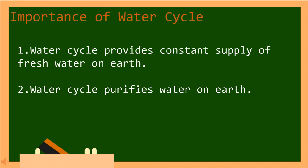Let's have the importance of water cycle. First, water cycle provides constant supply of fresh water on earth. Second, water cycle purifies water on earth. In Tagalog, mga kahalagahan ng cycle ng tubig. Una, ang pag-ikot ng tubig ay nagbibigay ng patuloy na supply ng sariwang tubig sa mundo. Pangalawa, ang siklo ng tubig ay naglilinis ng tubig sa lupa.